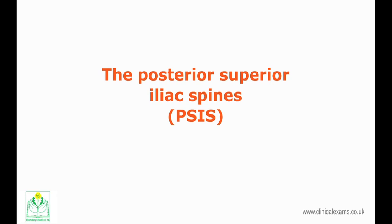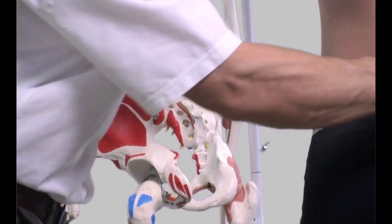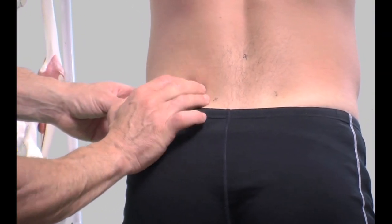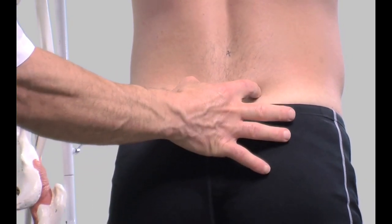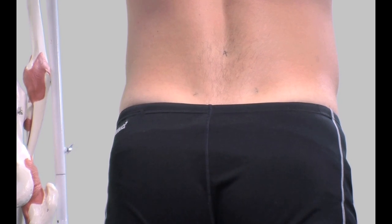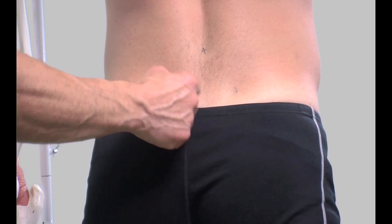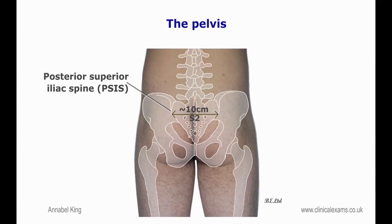The posterior superior iliac spine. The posterior border of the iliac can be traced until a firm rounded projection is reached. In most individuals when standing, they may be identified by two dimples superior and medial to the gluteal muscles, commonly referred to as the dimples of Venus. The distance between the two posterior superior iliac spines is shorter than the anterior superior iliac spines, and although variable, they are about 10 cm apart. The posterior superior iliac spine serves for the attachment of the oblique portion of the posterior sacroiliac ligaments and the multifidus muscle. It crosses the spinous process of S2 more consistently than the iliac crests with L4, and is therefore considered a more reliable landmark.